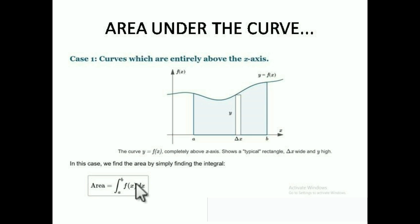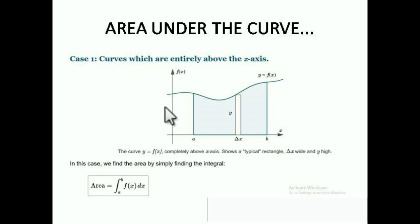Now please understand this — the limit is given on the x-axis, so it is dx because x is the variable. With dx you multiply y, so y = f(x). If the limits are given from the y-axis, then you have dy, and you multiply it with x, so the answer is integration from a to b of x dy.